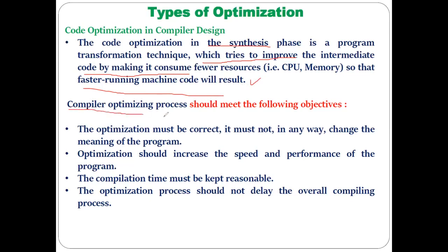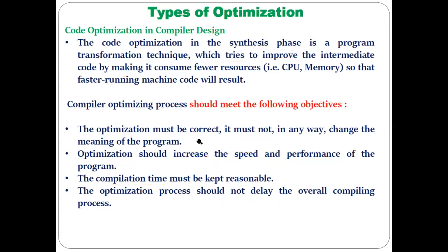Through code optimization, the following objectives can be achieved: the optimization must be correct — the meaning and output of the program should not be changed. The speed of execution and performance of the program should increase. Also, the compilation time must be kept reasonable and should decrease, meaning compilation should be performed within a less amount of time.